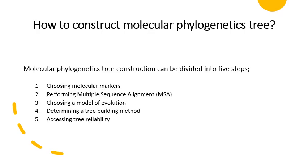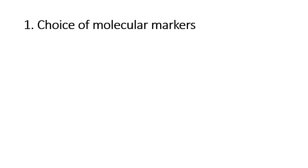The approach for constructing a tree can be divided into five steps. The first one is choosing the right molecular markers. The second step is performing multiple sequence alignment. The third step is choosing a model of evolution. The fourth step is determining a tree building method. And the last step is to assess the tree reliability. We are going to discuss these points one by one in detail.